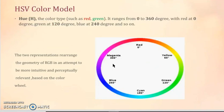H stands for hue, the color type such as red, green. It ranges from 0 to 360 degrees with red at 0 degrees, green at 120 degrees and blue at 240 degrees and so on. The two representations rearrange the geometry of RGB in an attempt to be more intuitive and perpetually relevant based on the color wheel.